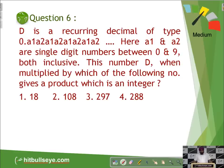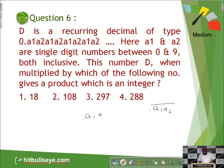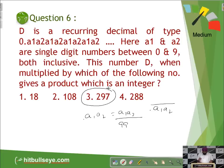D is a recurring decimal of the type 0.a1a2a1a2a1a2, where a1 and a2 are single-digit numbers between 0 and 9, both inclusive. This number D, when multiplied by which of the following numbers gives a product which is an integer? This is a question of pure recurring numbers. It is 0.a1a2 bar, which when converted to a fraction gives a1a2 upon 99. So the denominator is 99. To get an integer, we need a multiple of 99. Only one option is a multiple of 99, that is 297, and hence that is the answer.